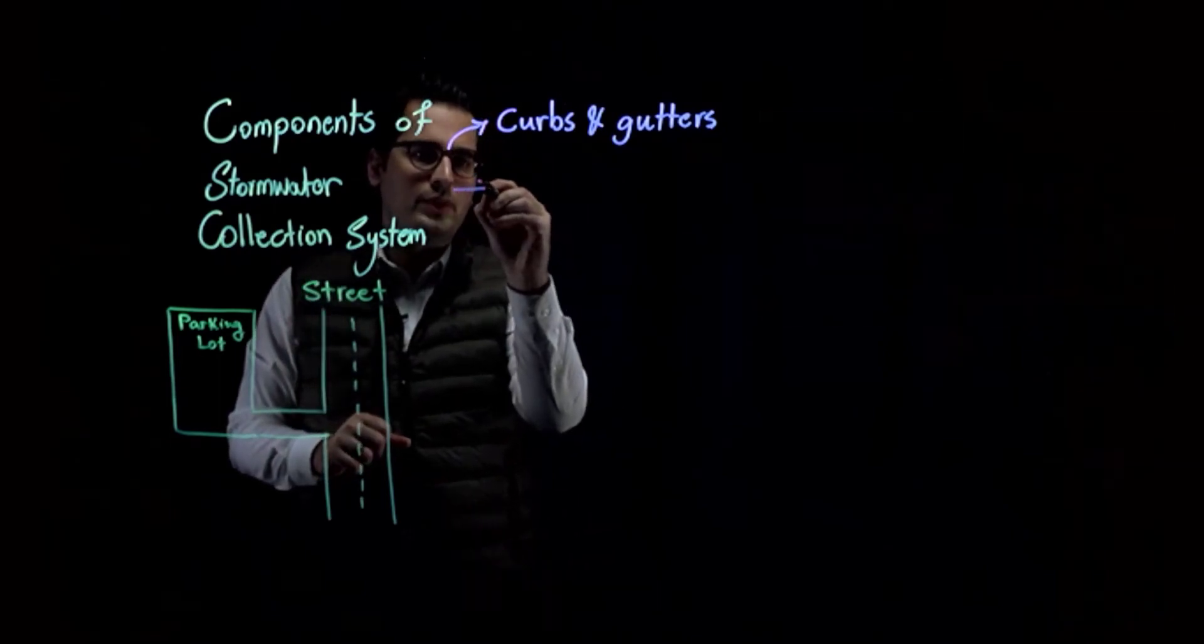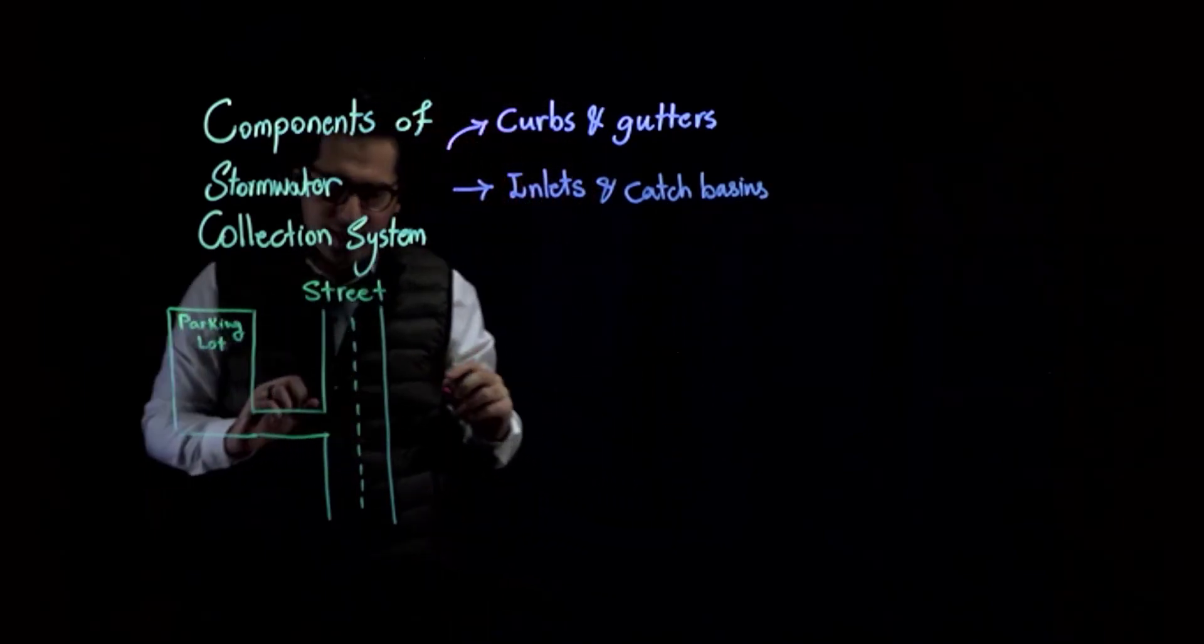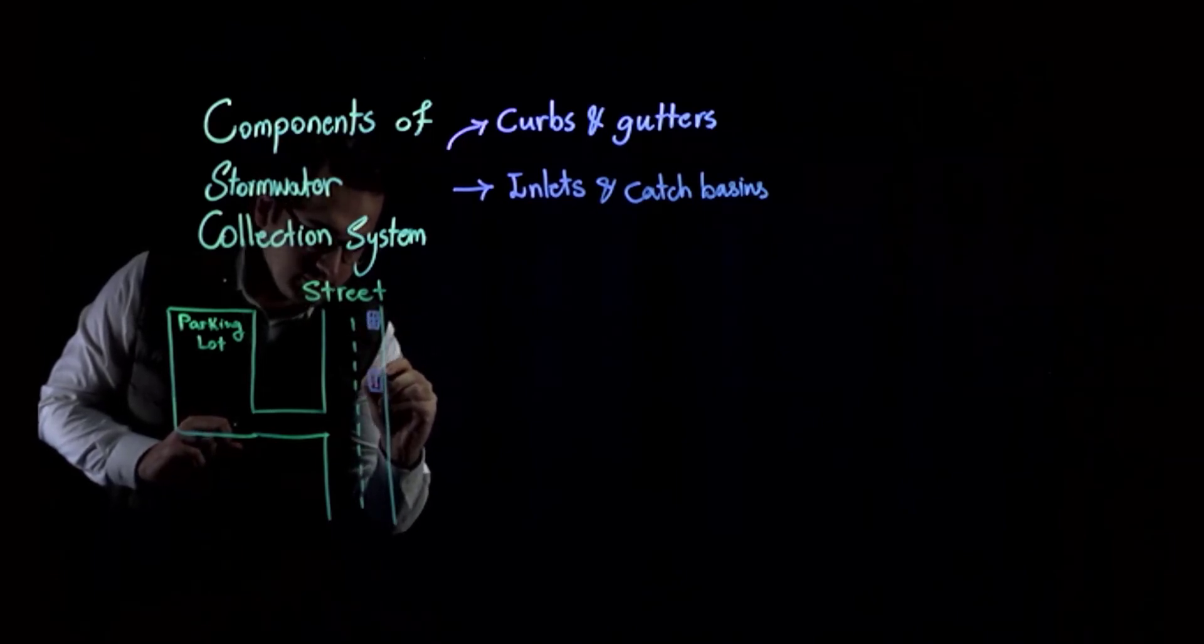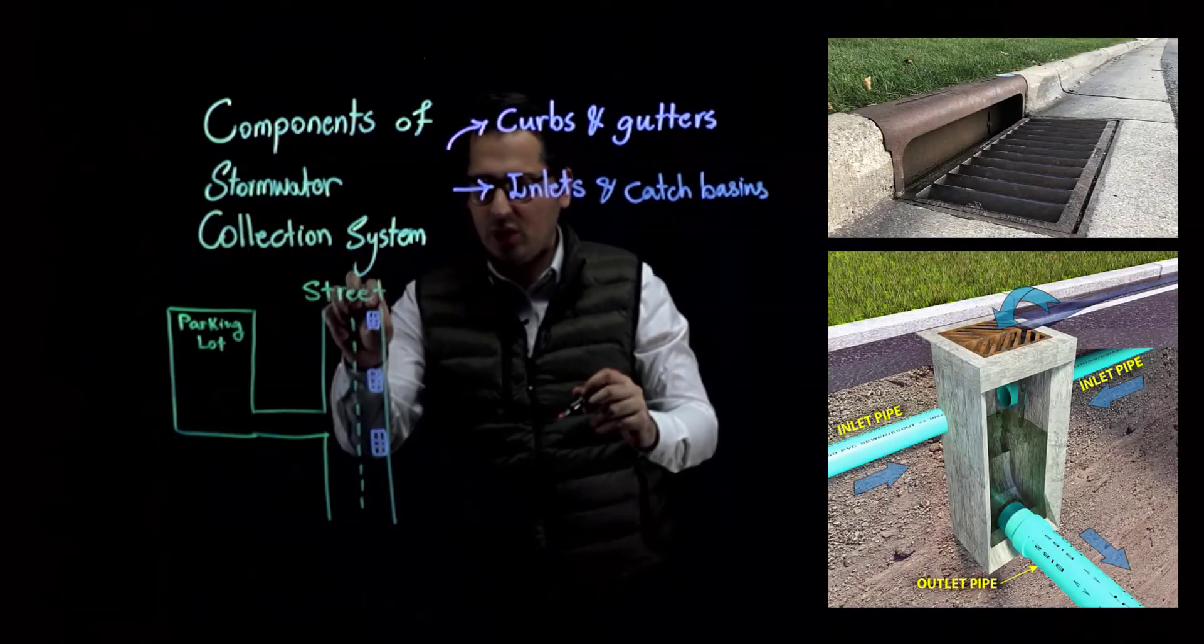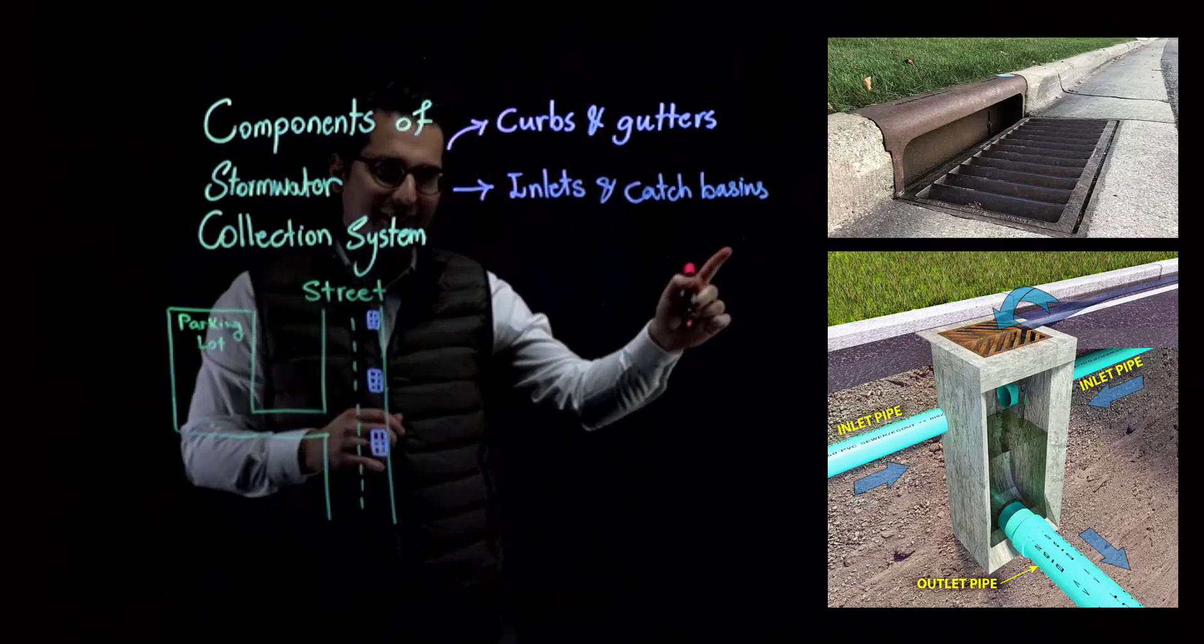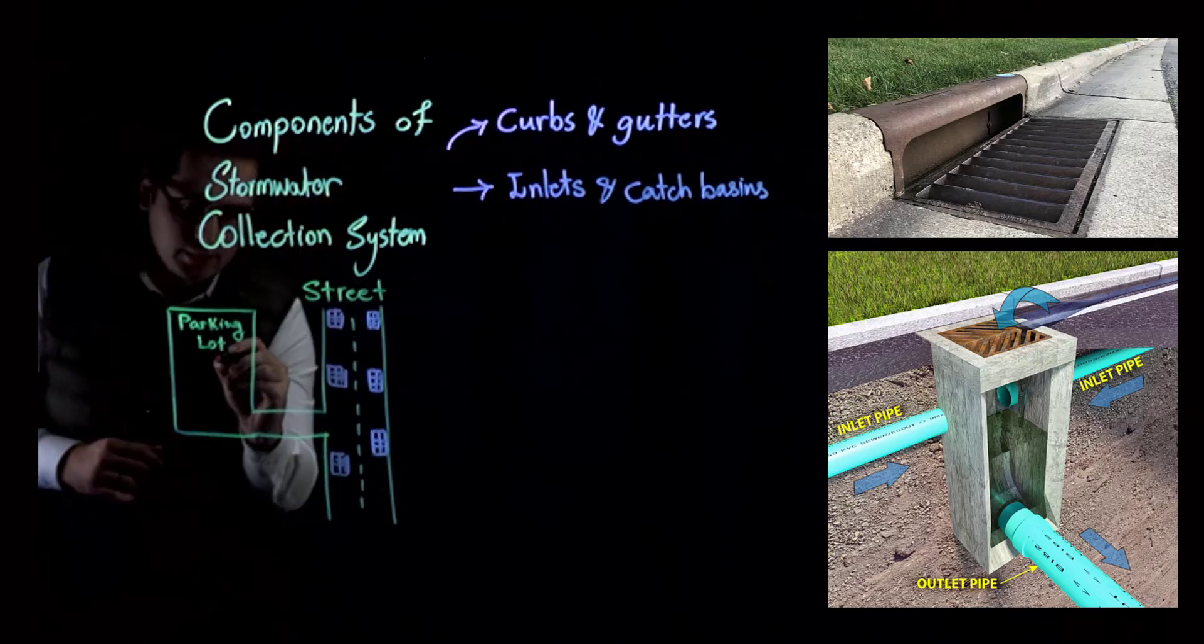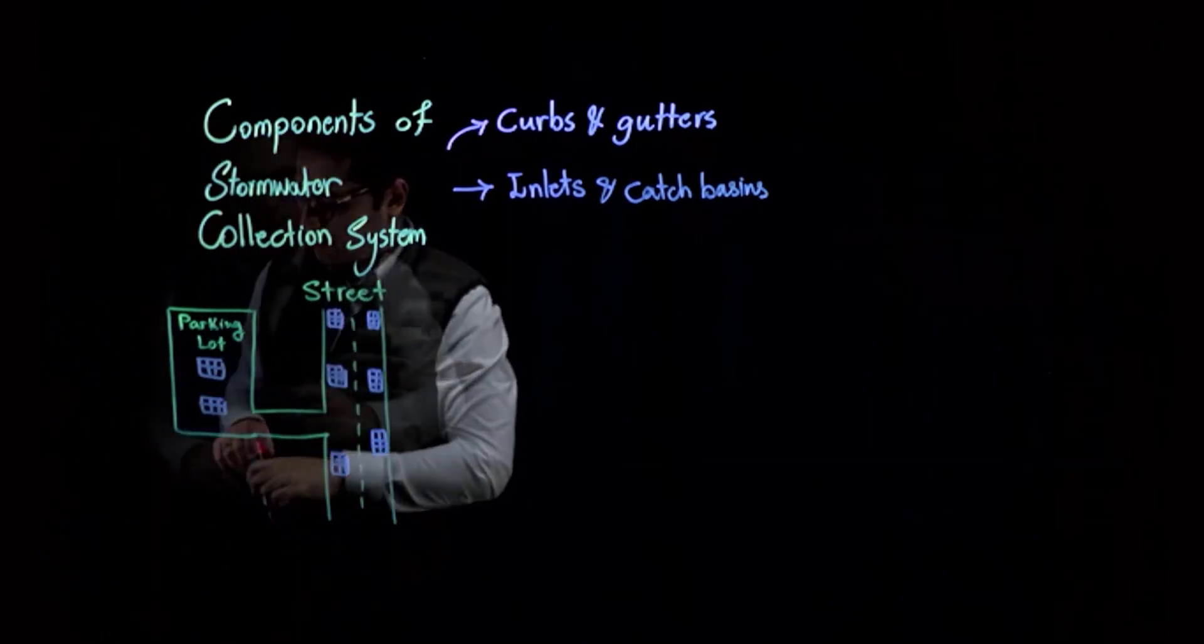The second part is going to be inlets and catch basins. I am pretty sure that you have noticed as you are walking in a street, you will see small inlets along the street, something like this. Essentially it catches the water. So these are inlets and there's a structure right beneath the inlet that is called catch basin. The photos for the inlets and catch basins are right over here, and this exists both sides normally. Also in a parking lot, because it's a paved area, you will have some inlets and catch basins as well.